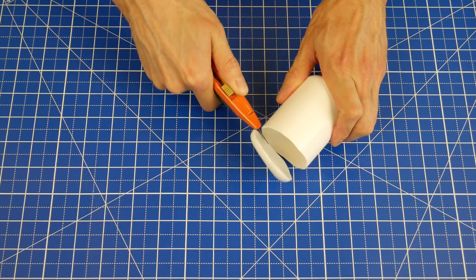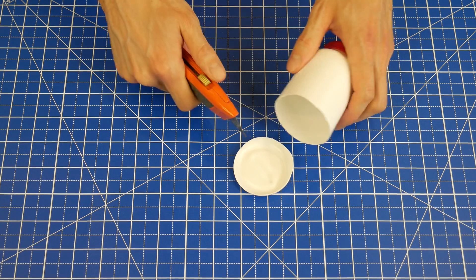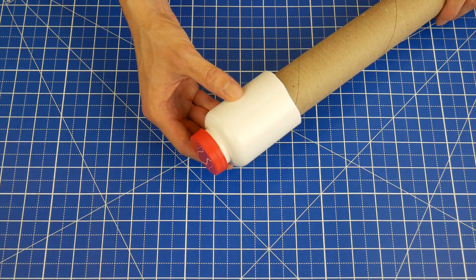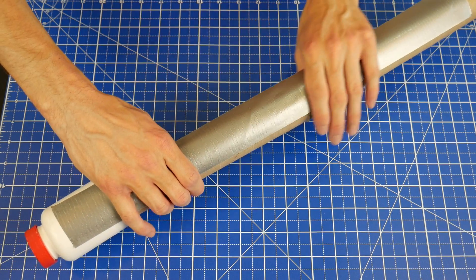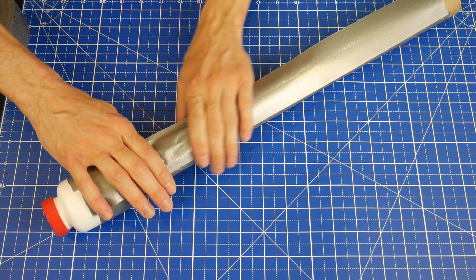Fit the bottle over the tube, then cover the whole thing in long strips of duct tape. This holds it all together and makes it look way better.